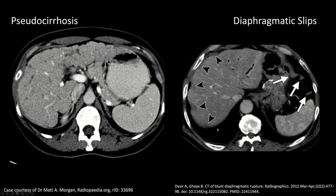So I think we'll stop there for this topic. For now, if you're starting out, it's better to think that in most cases, frank surface nodularity is hepatic cirrhosis until proven otherwise.